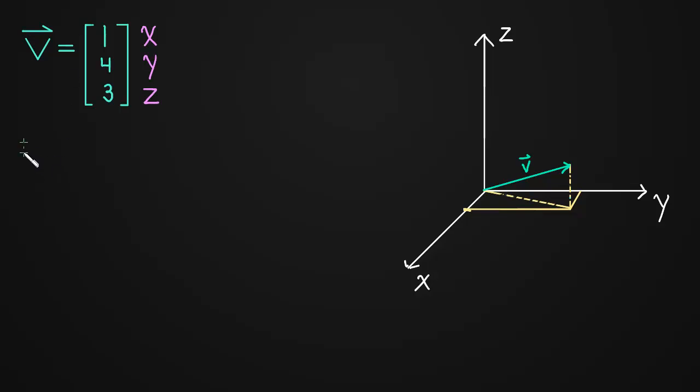Let's talk about finding the length of a vector that has three components. So here we have the vector v equal to 1, 4, 3, and I want to find its length.